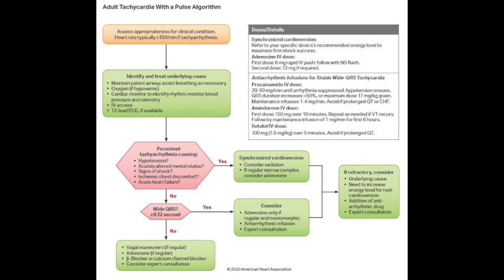Tachycardia algorithm: check pulse. No pulse — only two shockable rhythms using defibrillation (unsynchronized cardioversion): V-fib and pulseless ventricular tachycardia. If pulse is present, check stable vs. unstable. Unstable (hypotension, altered mental status, refractory chest pain, acute heart failure): synchronized cardioversion. If regular narrow QRS complex, consider adenosine, but remember synchronized cardioversion for unstable.